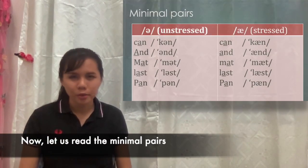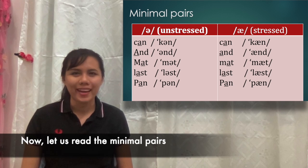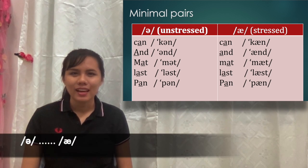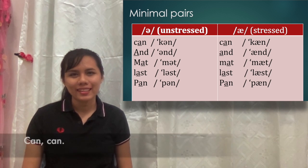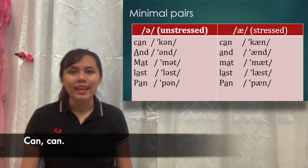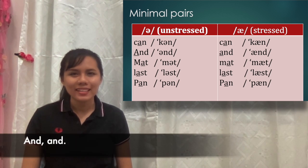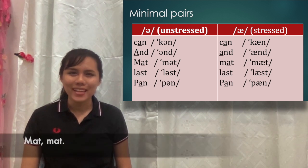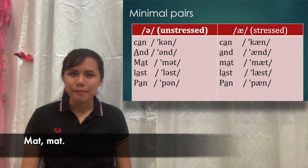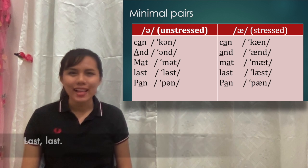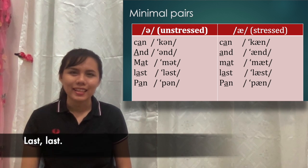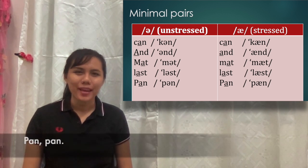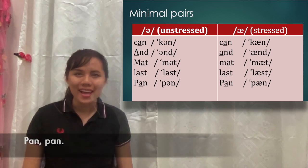Now let us read the minimal pairs. A. Can. And. Met, mat. Last. Pen.